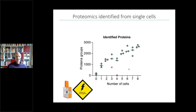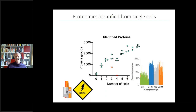Since very recently, with a new instrument not yet on the market, when we FACS-sort individual cells — zero cells in the well gives no proteins, but one individually sorted cell gives about 1,000 proteins — and as we go up to eight cells, it scales accordingly. In the best case now, we can go up to 2,000 proteins in a single cell.